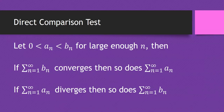Here is the direct comparison test. We start with two sequences, denoted a sub n and b sub n, both having positive terms only. We require that b sub n is bigger than a sub n for each term — term by term, b sub n is bigger. This is for large enough n, so maybe the first couple of terms don't obey this, but after a certain point it's always true.